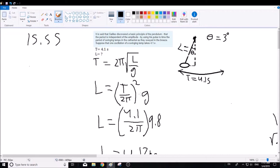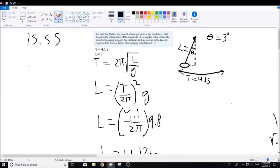Then we just plug in our 4.1 seconds for the period and 9.8 for the gravity, and we get that the length of the chain is 4.17 meters.